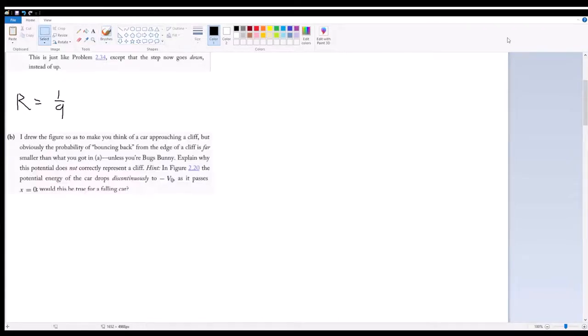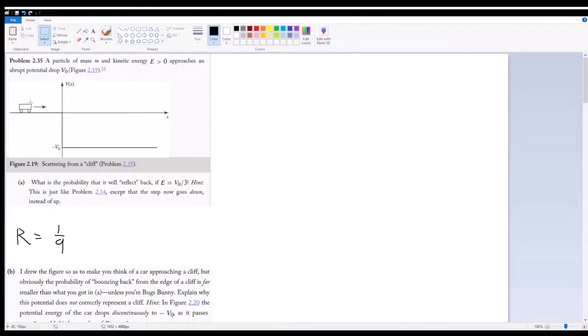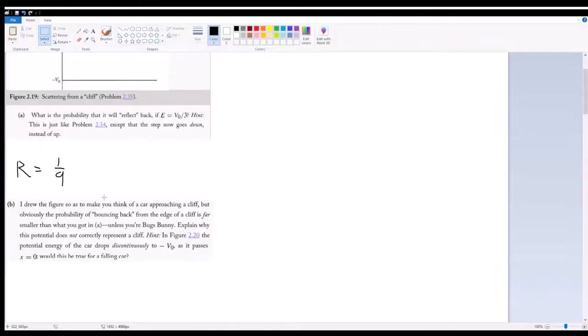Part B is a bit of a conceptual question. So we were drawing the figure in part A as if we were thinking of the particle as if it was a cart approaching a cliff. Now, realistically, if you approached a cliff and just ran, attempted to run over it, the probability of you bouncing back would obviously not be as large as 1/9th. Realistically, it would be like an infinitesimally tiny chance. And we want to explain why this potential does not correctly represent a cliff. So the reason why this doesn't work for classical is that in order for a classical object with mass to have its potential energy change instantaneously, it would have to accelerate at a rate of infinity, which obviously is impossible.